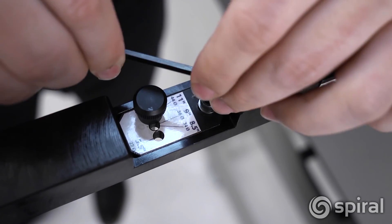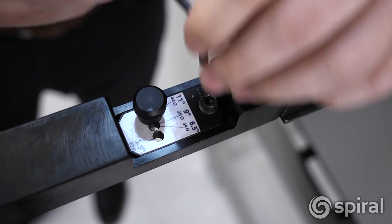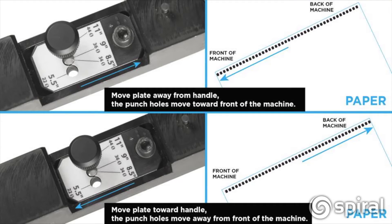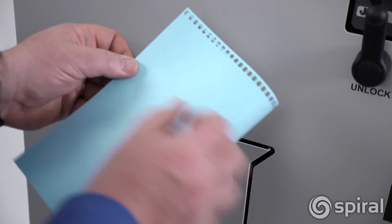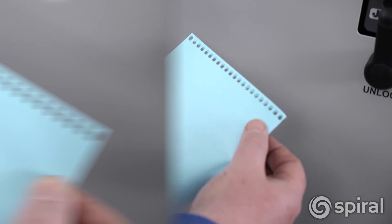Moving the die pin back on the die means the die will slide further into the machine and the holes will align closer to the back of the machine. Moving the die pin forward on the die means the die will not slide as far into the machine and the holes will align closer to the front of the machine. Run another test sheet and inspect the holes to verify they are centered on the paper.